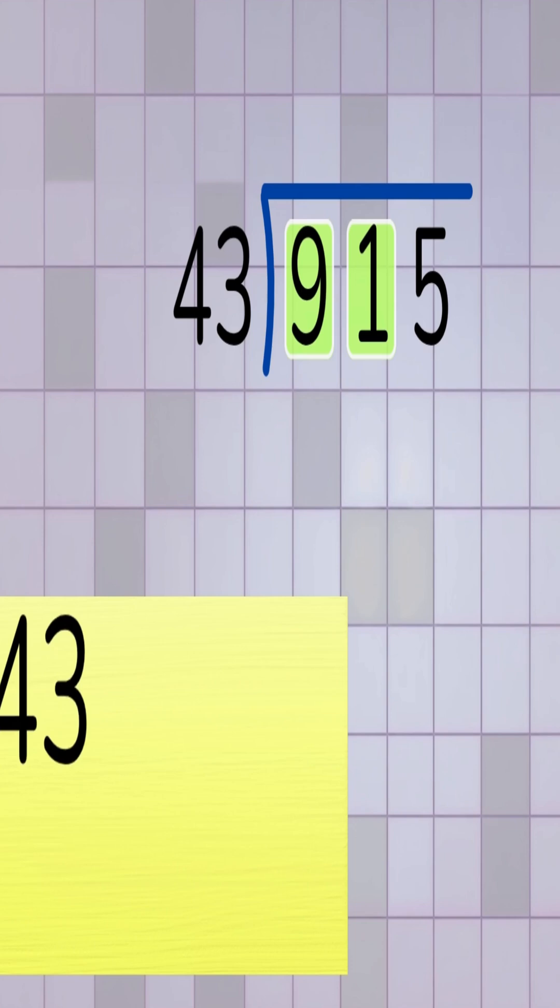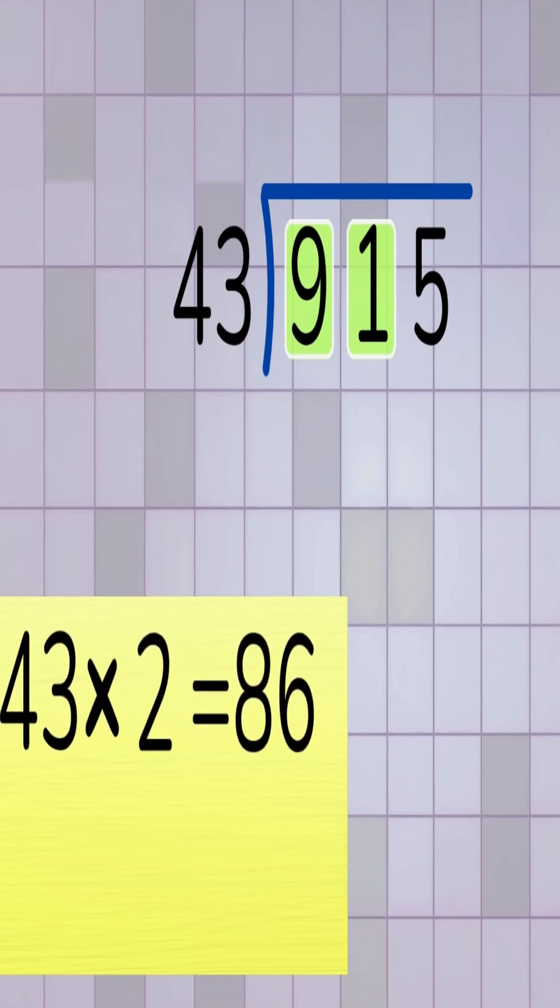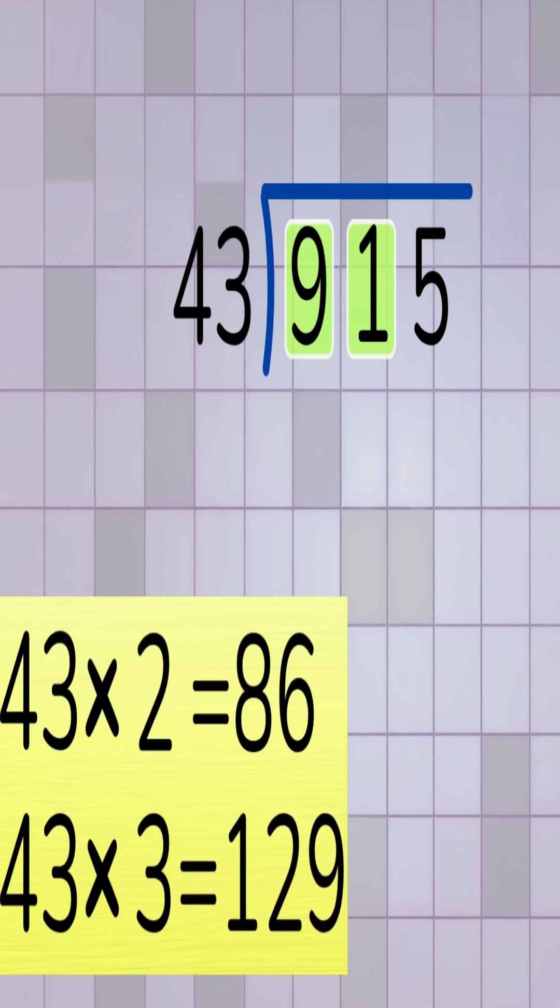Let's estimate it. 43 times 2 is 86. 43 times 3 is 129, which is too much. So we choose 2.